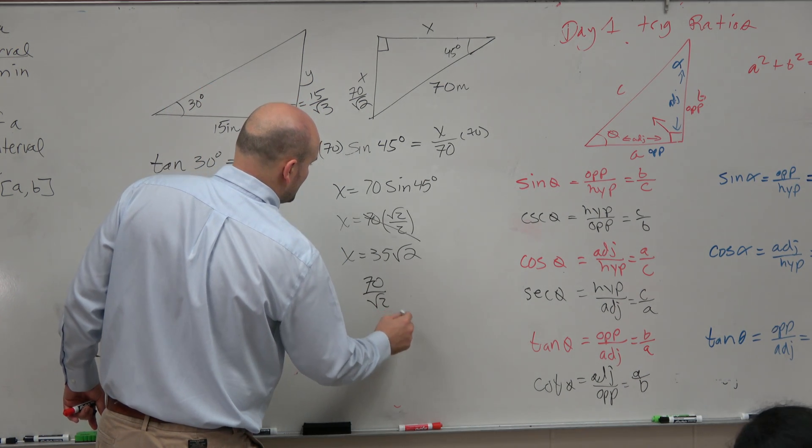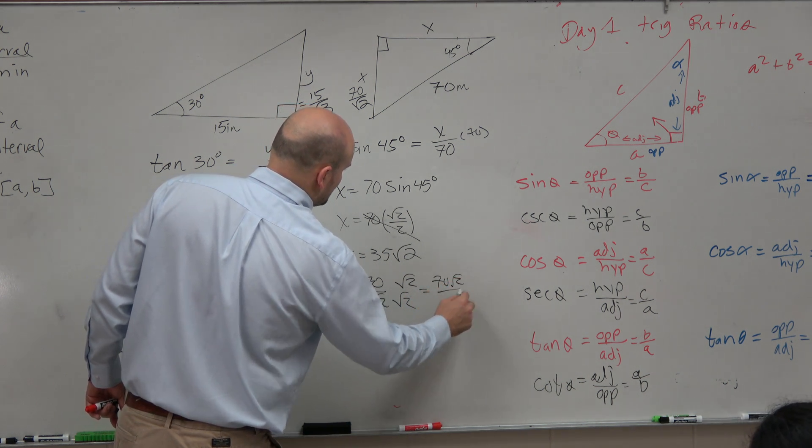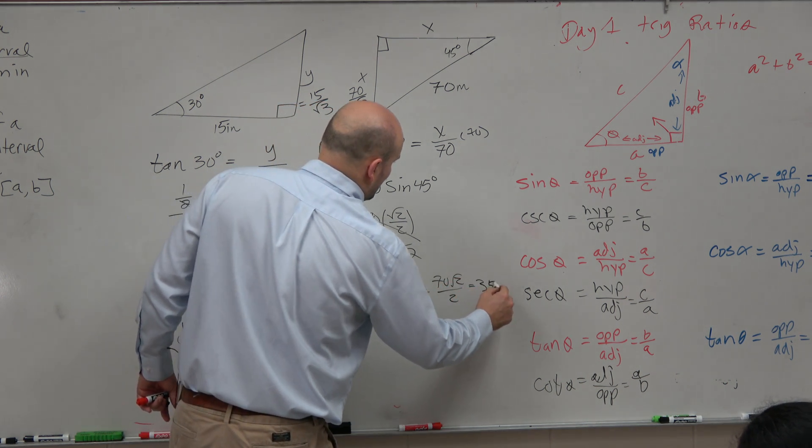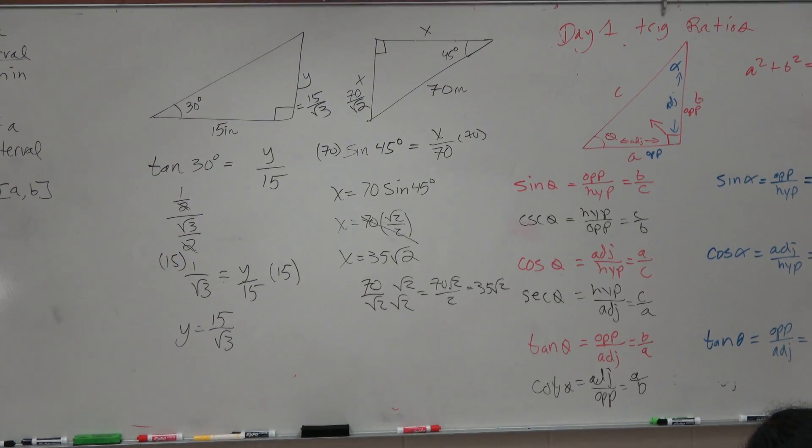70 over the square root of 2. Rationalize the denominator. 70 square root of 2 over 2, 35 square root of 2. OK? But here's the thing, guys. Most students do not remember your special right triangles. And guess what?